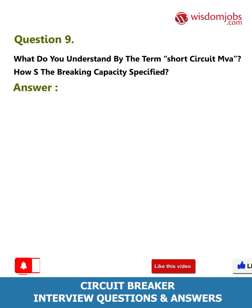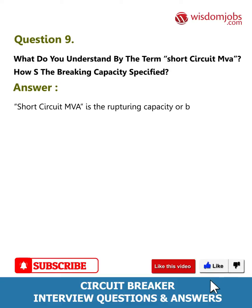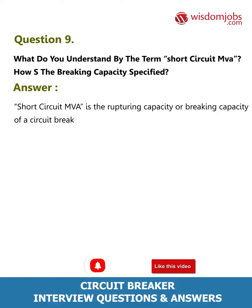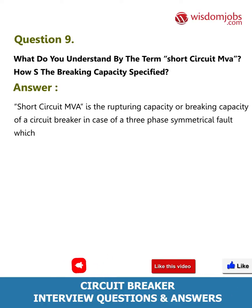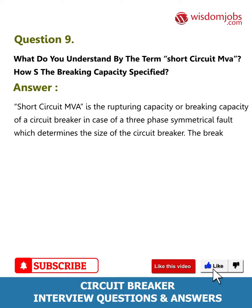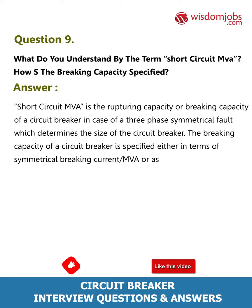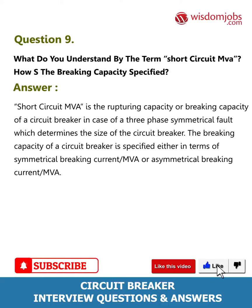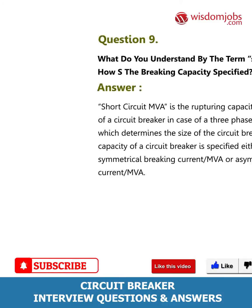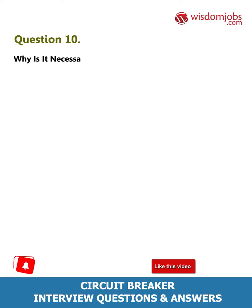Question 9: What do you understand by the term short circuit MVA and how is the breaking capacity specified? Answer: Short circuit MVA is the rupturing or breaking capacity of a circuit breaker in case of a three-phase symmetrical fault, which determines the size of the circuit breaker. The breaking capacity is specified either in terms of symmetrical breaking current MVA or asymmetrical breaking current MVA.